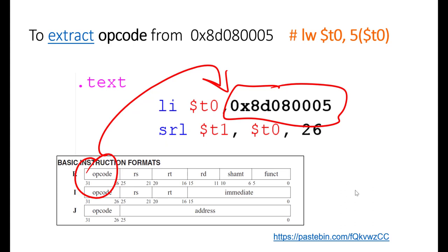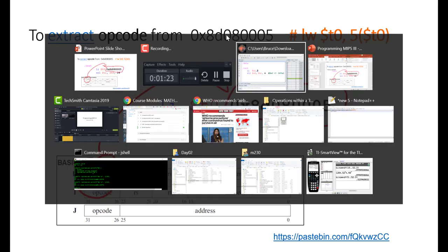Imagine that you have an instruction that's encoded into a 32-bit word. For example, load word T0, 5, T0 converts or is encoded as this hex value.